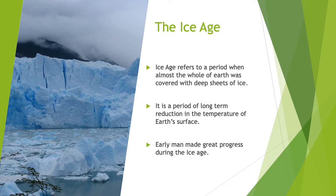Among those species who survived through the great climatic changes were advanced primates, particularly man. We learned earlier that man belongs to the group called mammals. More specifically, man belongs to a group of mammals known as primates. The species of man was one of those species which survived through the great climatic changes and continued with the process of evolution, during which great changes took place in different stages.